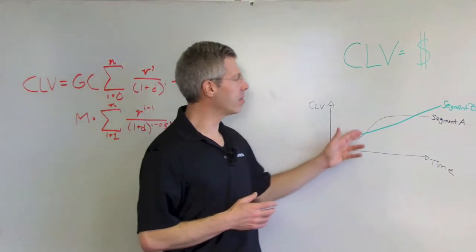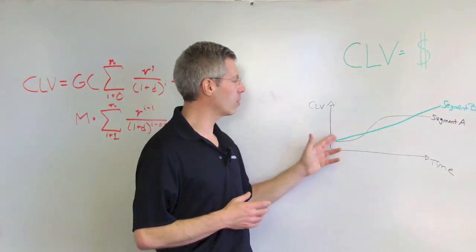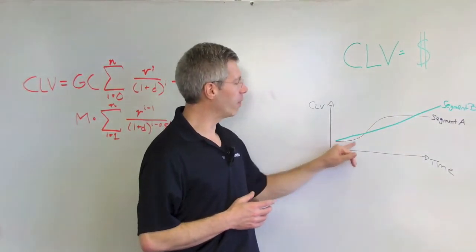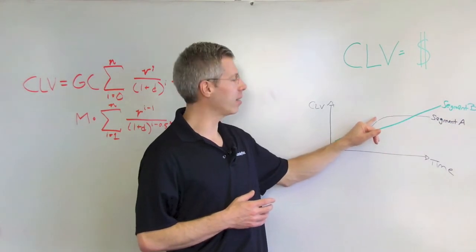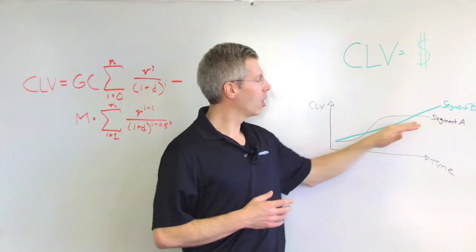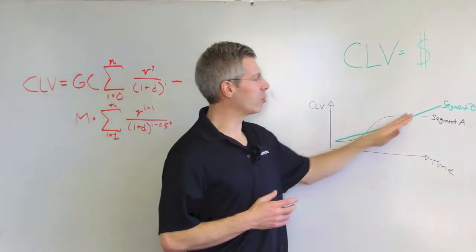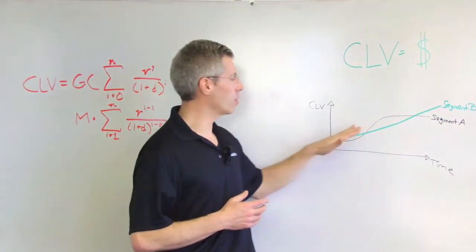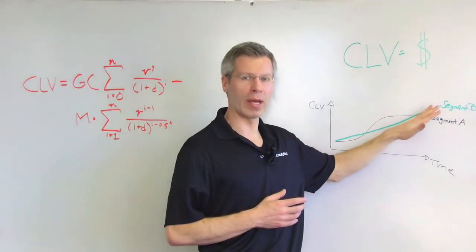And you might find that one segment has a curve like this, meaning you have a very fast acceleration of high expenditure in the beginning and then it plateaus and flattens out, whereas segment B might be a straight increase where your customers or your customer segment just continues to increase more and more spend.